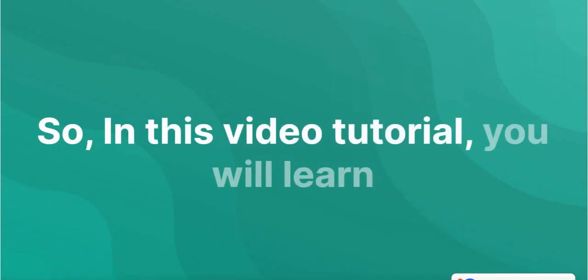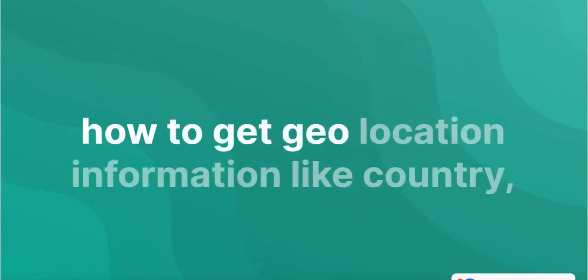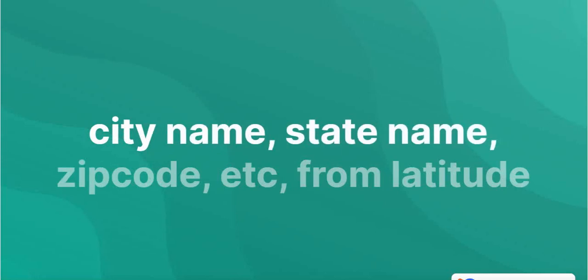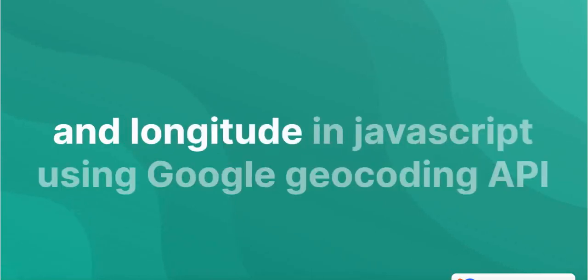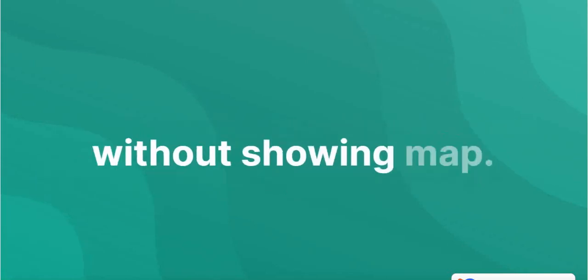In this video tutorial, you will learn how to get geolocation information like country, city name, state name, zip code, etc. from latitude and longitude in Javascript using Google Geocoding API without showing map.